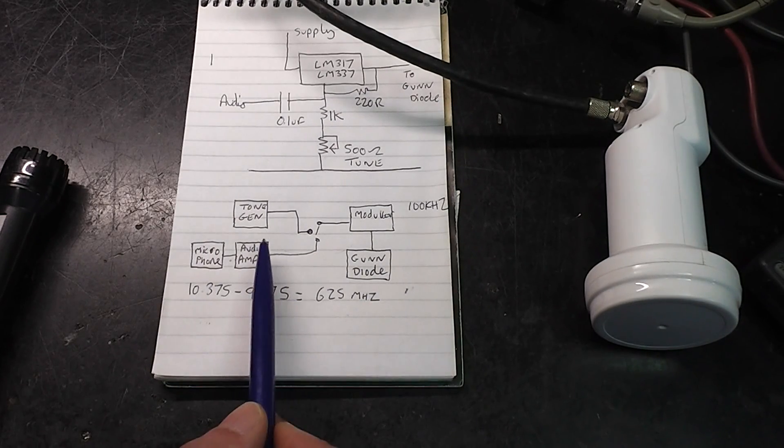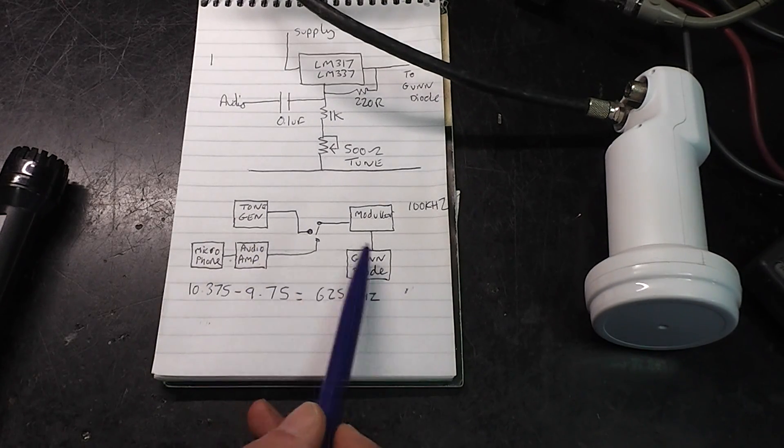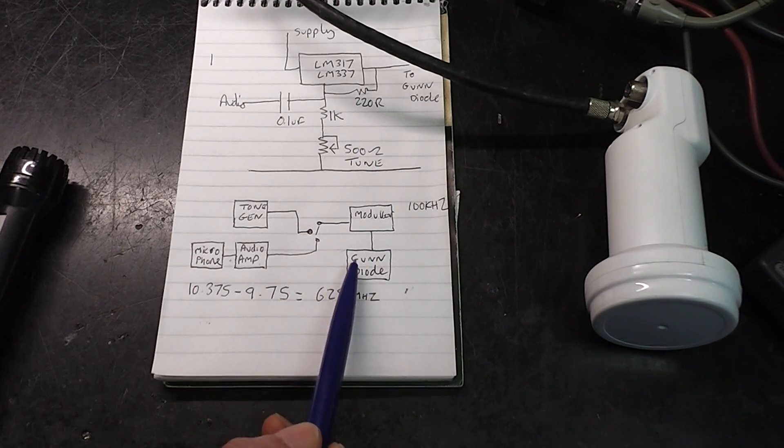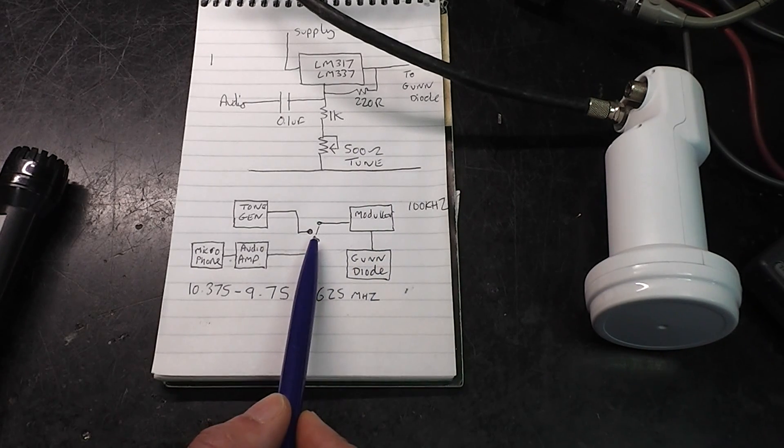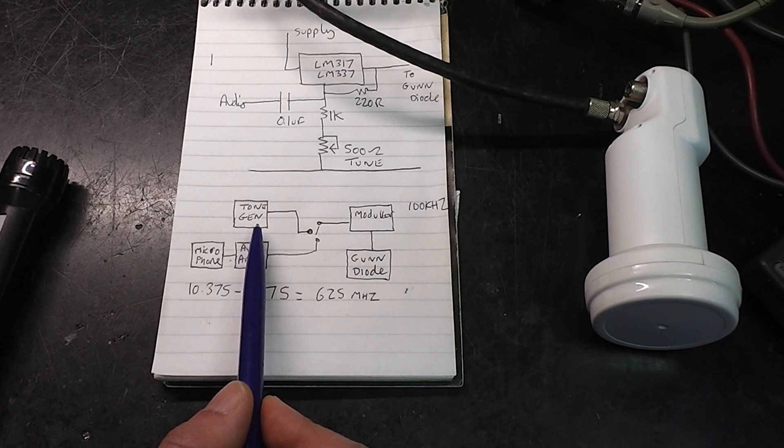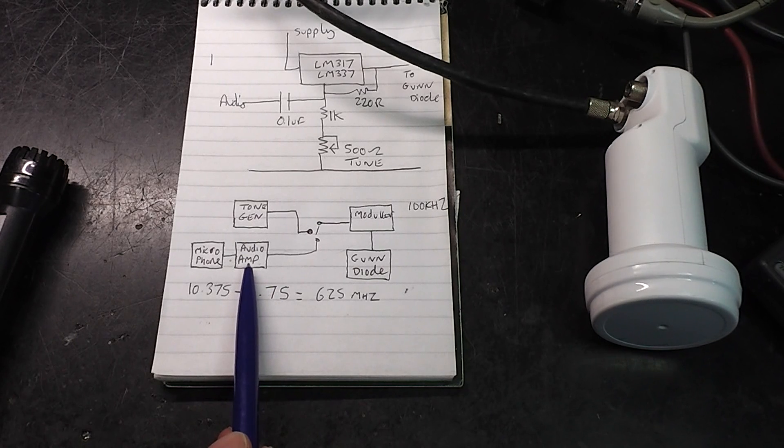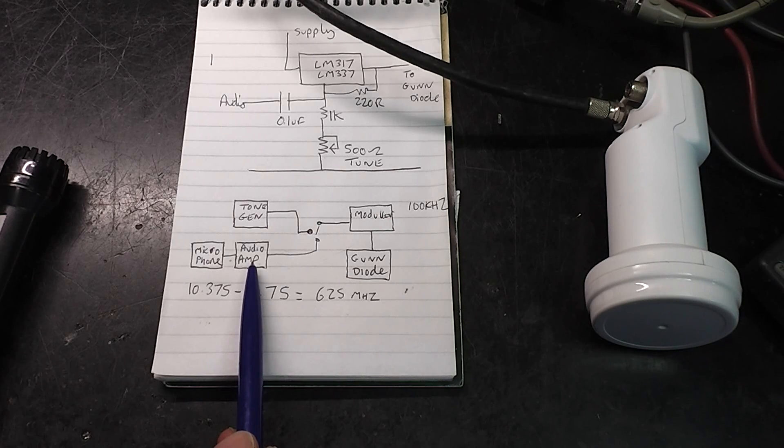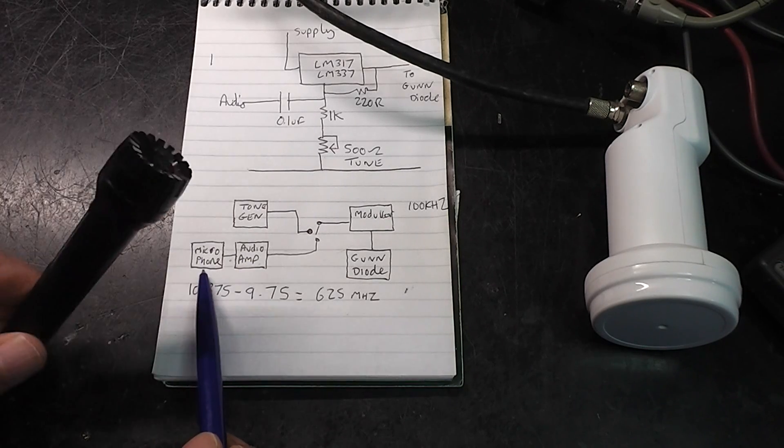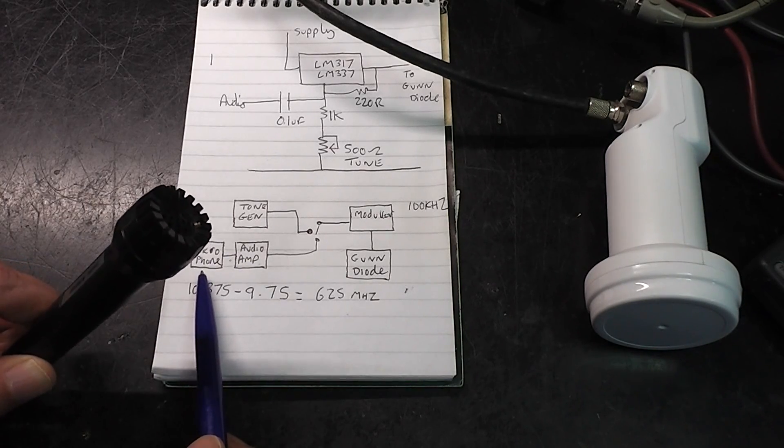Just a very quick block diagram here. The modulator, which you've just seen, is connected to the gun diode. Then we've got a switch. There's a tone generator, which is just a simple astable multivibrator with two transistors. The audio amplifier is just a single stage class A amplifier, and just an ordinary cassette player microphone.